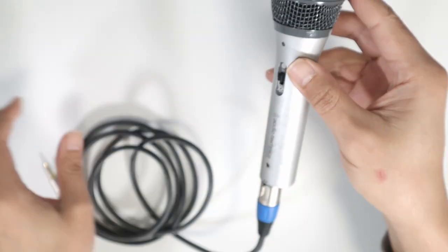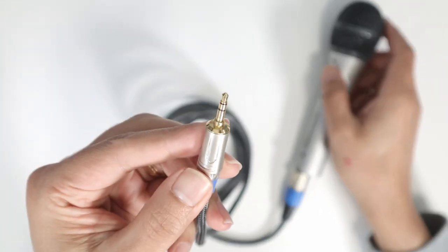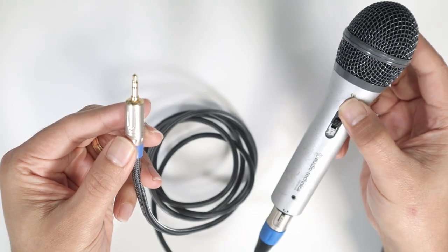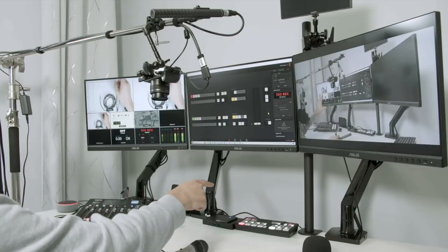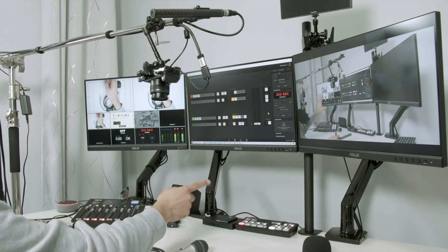And then what I do is connect the other end into my ATEM Mini Pro. I want to record using my Audio Technica mic to my ATEM Mini Pro, which is the device that I have there. It's basically a switcher and has an input for a microphone.